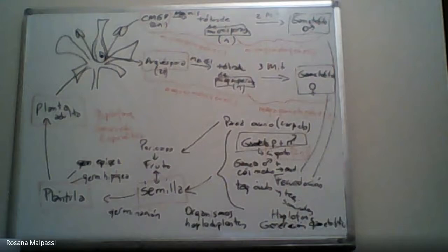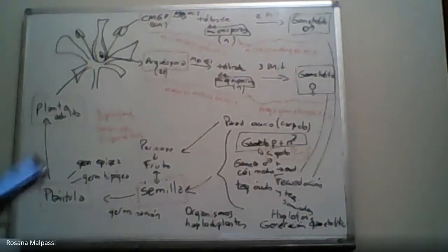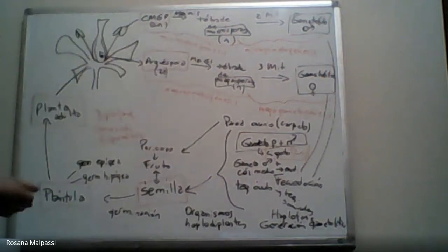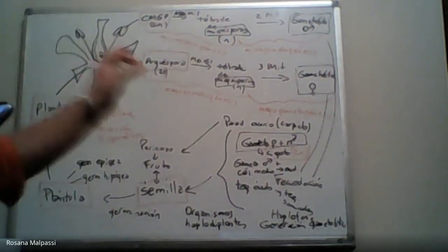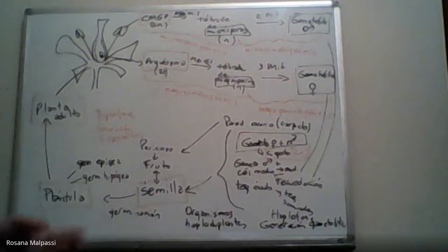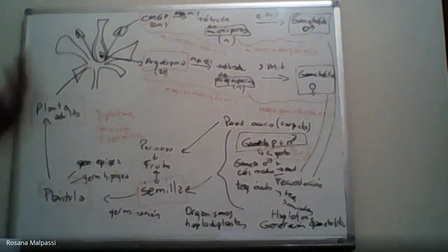La forma de aprovechar todo esto al máximo es estudiar todos los temas y después tratar de hacer este ciclo y tratar de poner cada tema en su lugar. Si logran hacer esto con todas las variantes según el grupo de plantas, según el ambiente, según si es crecimiento primario, secundario, con todas esas variantes, si lo logran hacer, ya tienen clara la materia.